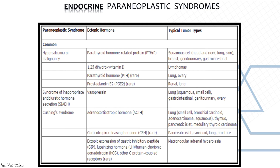The most important takeaway: the common endocrine paraneoplastic syndromes are hypercalcemia of malignancy, SIADH, and Cushing's syndrome. Hypercalcemia of malignancy involves PTHrP; SIADH involves vasopressin; Cushing's involves ACTH. Associated tumors: hypercalcemia with squamous cell of head, neck, lung, and lymphomas; SIADH with lung, ovary, GI, and GU tumors; Cushing's with lung, thymus, pancreatic, and thyroid carcinomas.